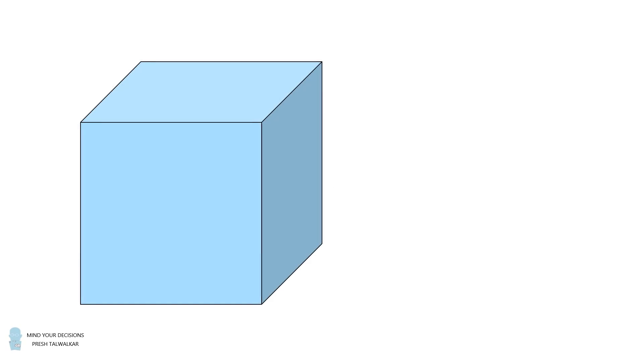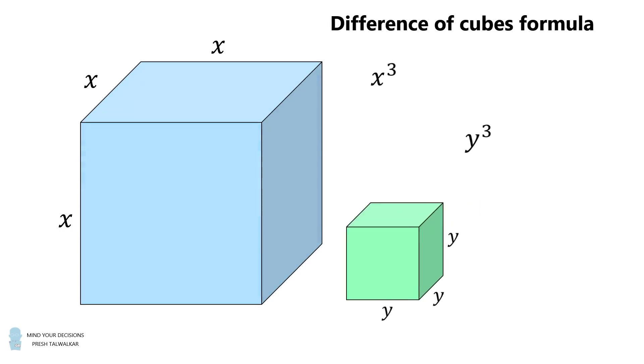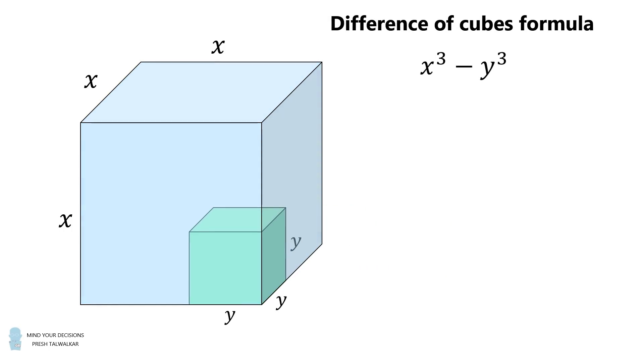I will first present a hint to solve this problem, and then I will go over a solution. First, let's go over the sum and differences of cubes. Construct one cube whose sides are equal to x. This cube has a volume equal to x cubed. Construct another cube whose sides are equal to y. This cube has a volume equal to y cubed.